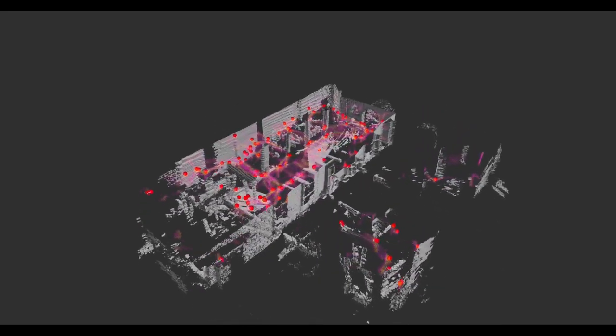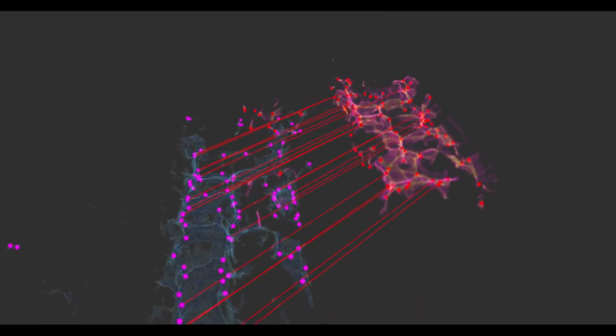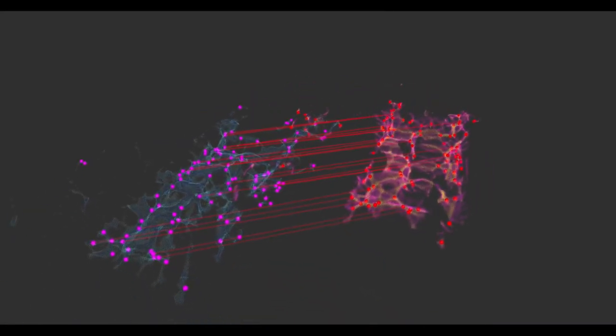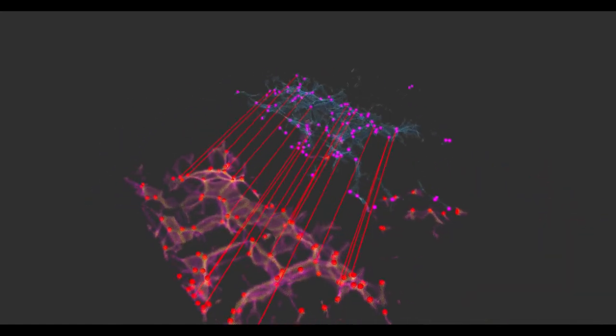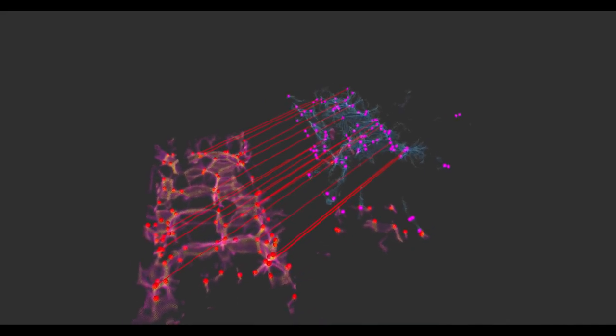Here, we show curvature clouds from two submaps at the beginning and end of a trajectory. The red lines show corresponding features which led to a successful match.